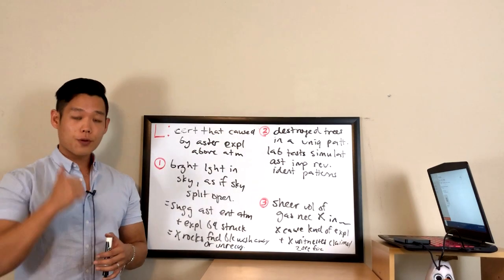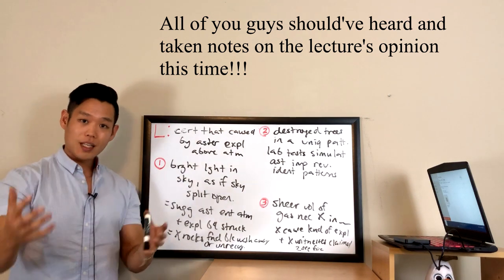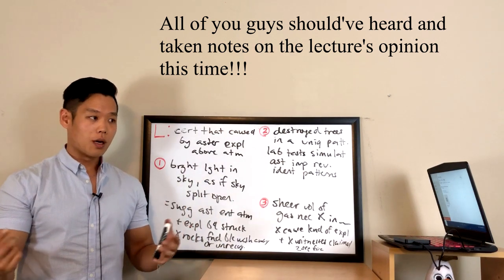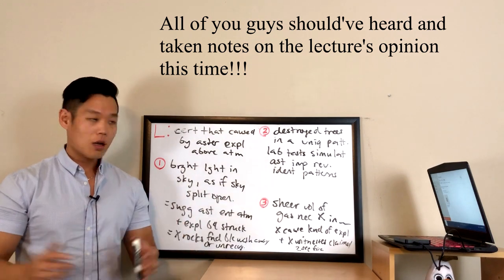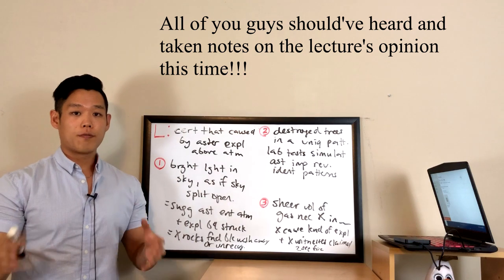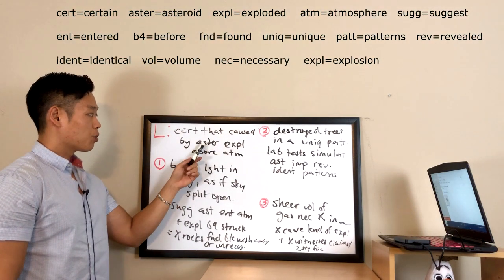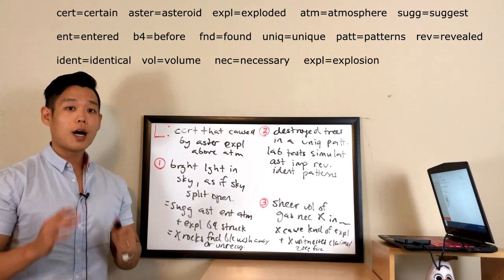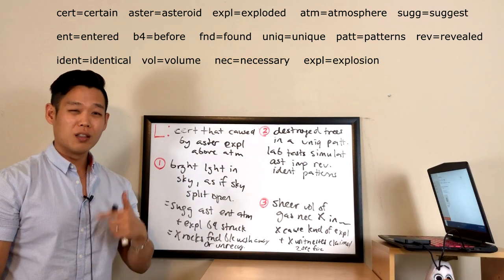Reviewing the lecture: Tunguska, Siberia, 1908 should have caught your attention right at the start as the topic. The professor mentioned other possible explanations — nuclear device, UFO, gas explosion — before stating his own opinion. You should have recognized the key moment when the professor declared his conclusion: 'It is certain that this event was caused by an asteroid that exploded above the earth's atmosphere.' If you missed this, pay closer attention to the professor's stated opinion at the start of future lectures.